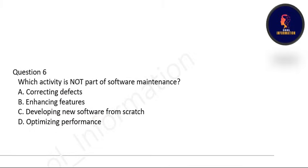Next question: which activity is not a part of software maintenance? Options are correcting defects, enhancing features, and developing new software from scratch. Developing new software from scratch is not a part of software maintenance — option C is correct. The rest — correcting defects and enhancing features — are parts of software maintenance. Keep that point in mind.